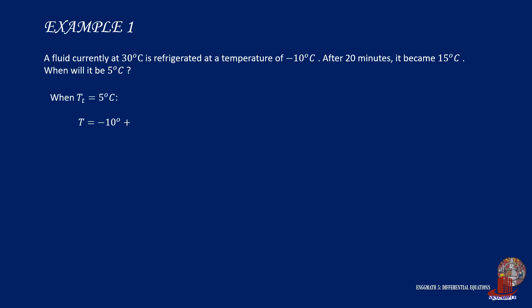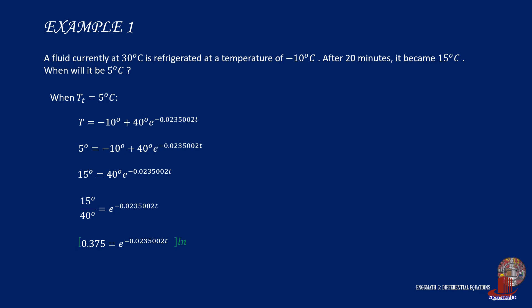Finally, the time it takes for the temperature of the particle to reach 5 degrees Celsius. With the modified equation, plug in 5 degrees at T and start simplifying the equation by collecting all constants to make 15 degrees is equal to 40 degrees times E raised to negative 0.0235002T. Divide the whole equation by 40 degrees and the result would be multiplied by ln to eliminate E. So the resulting equation is ln of 0.375 is equal to negative 0.0235002T, where dividing the left term by the value of K gives the value of T as 41.74 minutes.